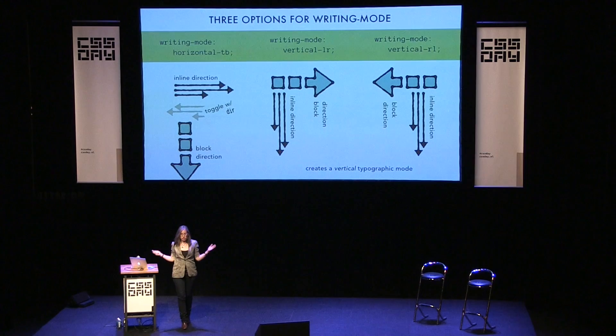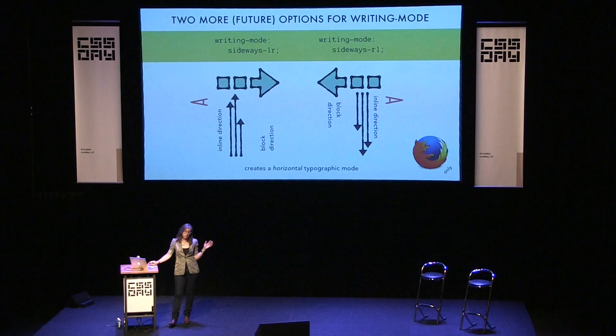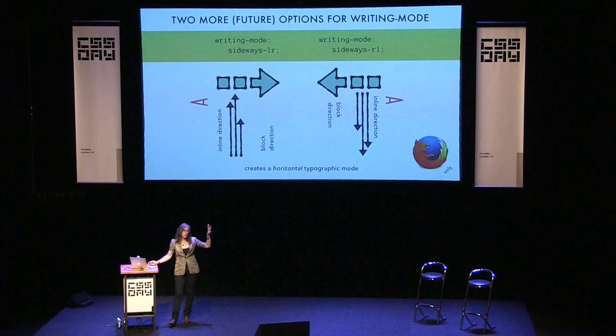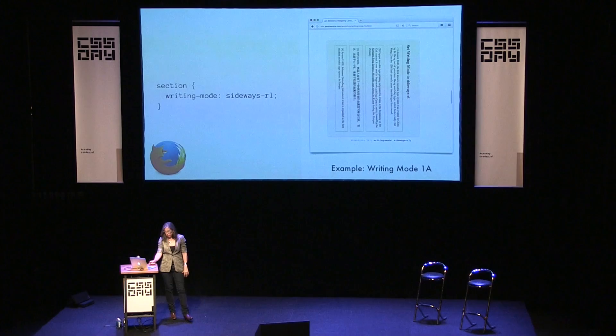There are two more options that work in Firefox but haven't been implemented in other browsers yet, and I hope they land soon: 'writing-mode: sideways-rl' and 'writing-mode: sideways-lr.' These create a horizontal typographic mode. The idea is that you're typesetting scripts that are typically horizontal and turning them sideways — so details around punctuation, underlining, and numbers are handled as expected for a horizontal typographic mode turned on its side.